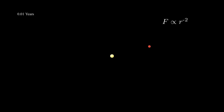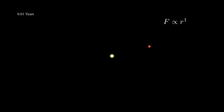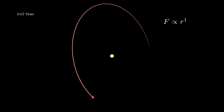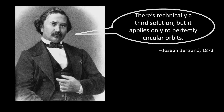There's the exponent minus 2, which is Newton's law of gravitation and gives you Keplerian orbits — ellipses with the center of force at one focus. And there's the exponent plus 1, which is Hooke's law of simple harmonic motion, also known as the spring force. That one gives you an ellipse with the center of force right in the middle. Technically there's a third solution, but it applies only to perfectly circular orbits.